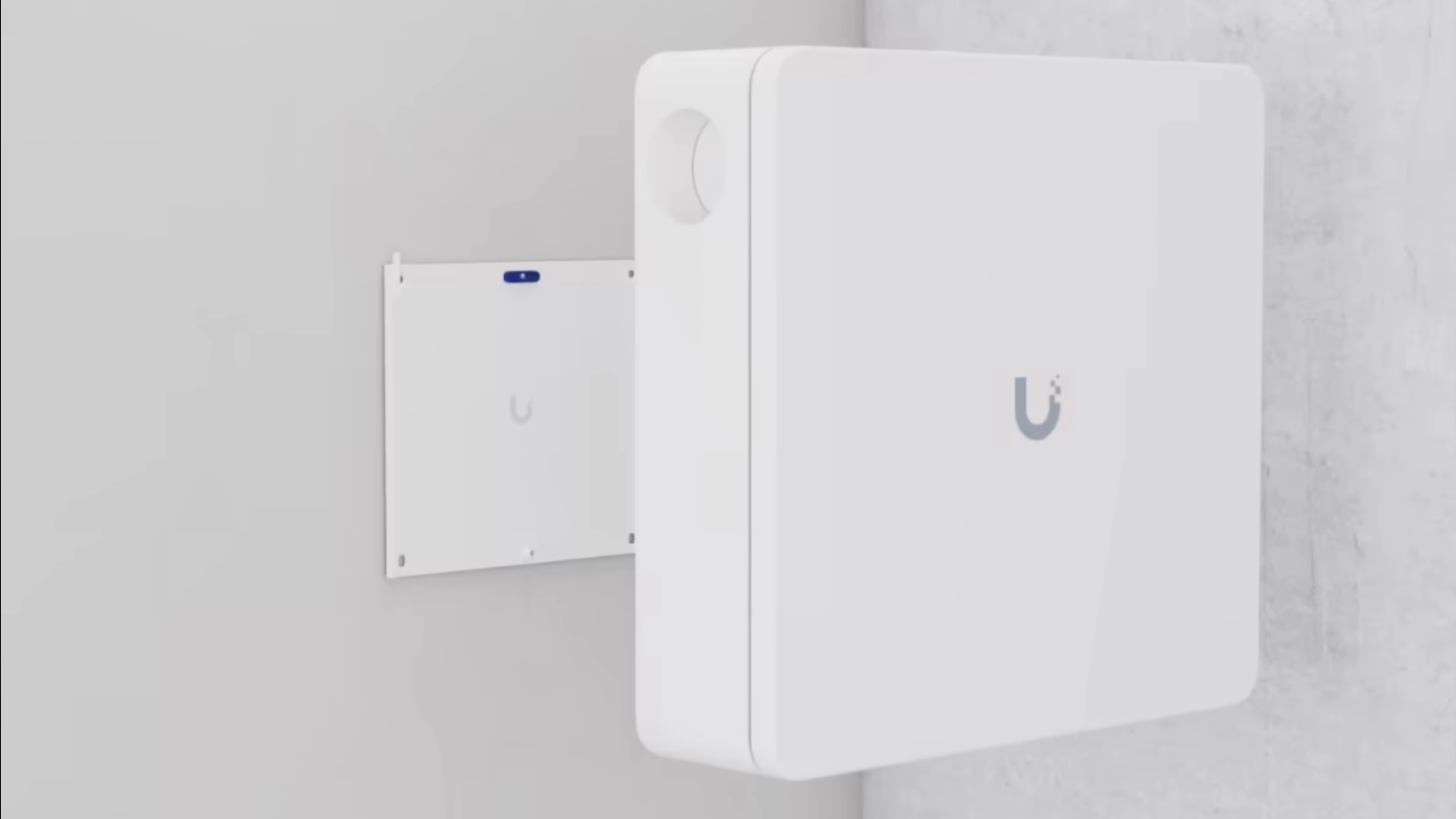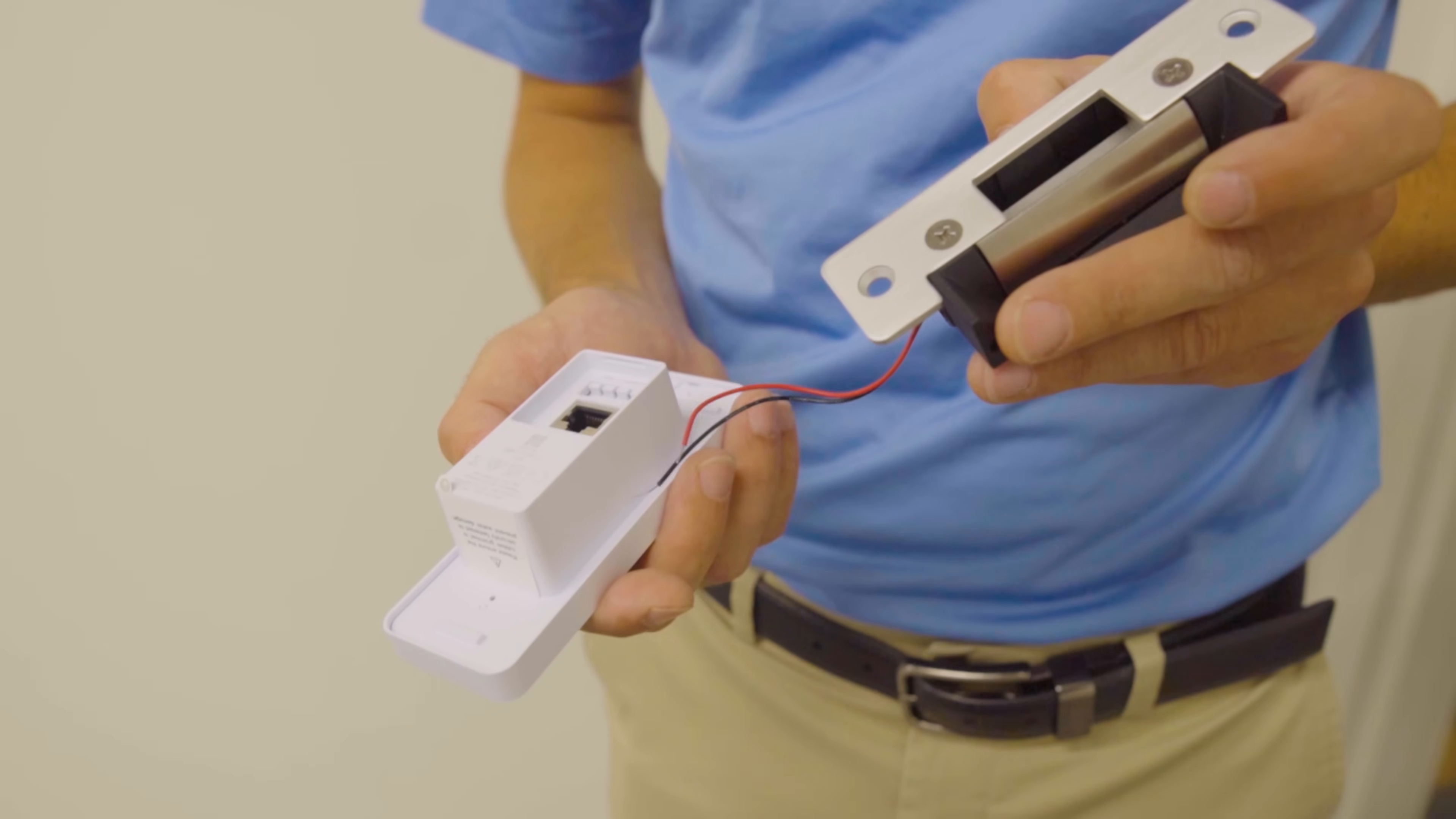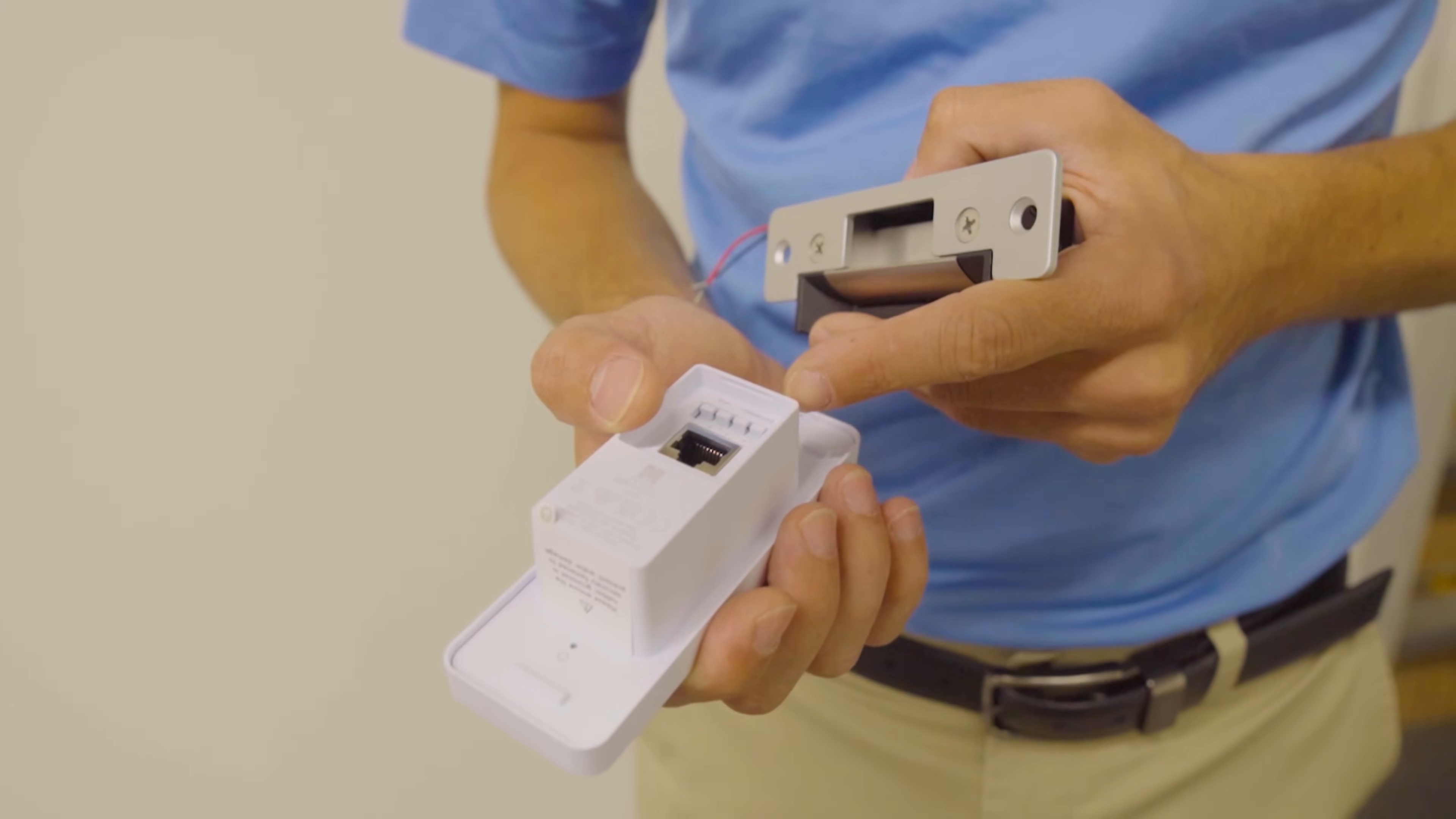This device has the potential to be a game changer when it comes to the access system. Currently they have an access hub that you have to hook up and set behind a wall or in your ceiling that will control the door access. This one consolidates all of that into one device. The way these devices will hook up is we'll provide PoE to the UniFi Access Ultra, and then I'll be running a copper line for the exit request to plug into the back of this device.